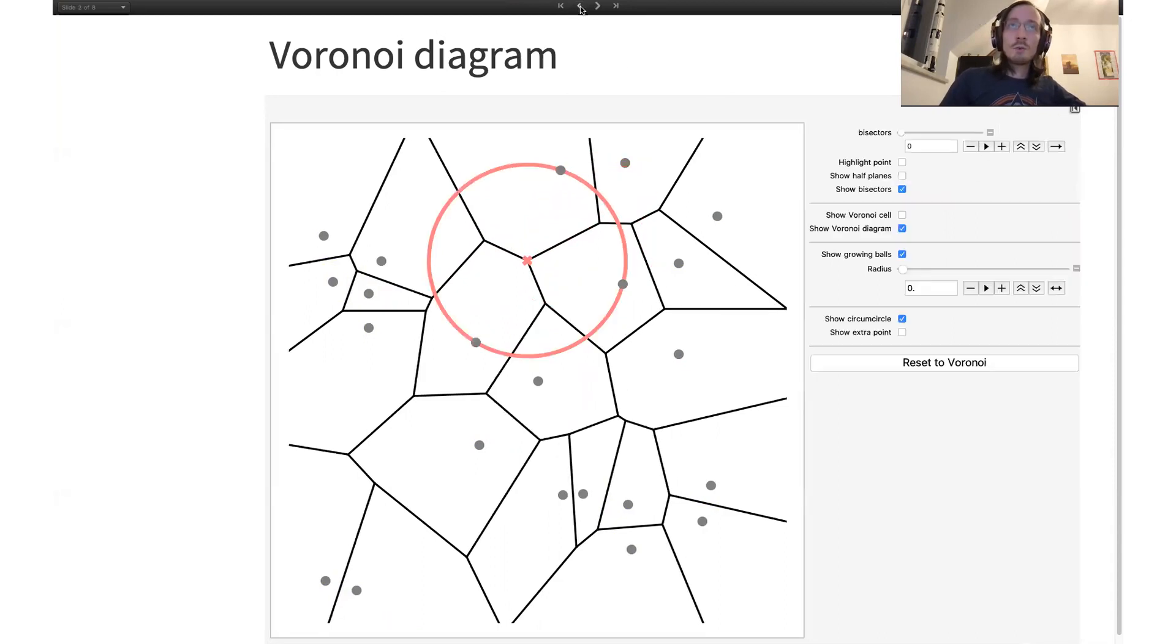So just to recapitulate: Voronoi diagram is decomposition of plane into regions of points that are closest to each of the data points. We can look at it with the language of disks of growing radius as well. They have very nice shape—they are convex polytopes—and the Voronoi vertices and edges can be characterized by centers of circumcircles.